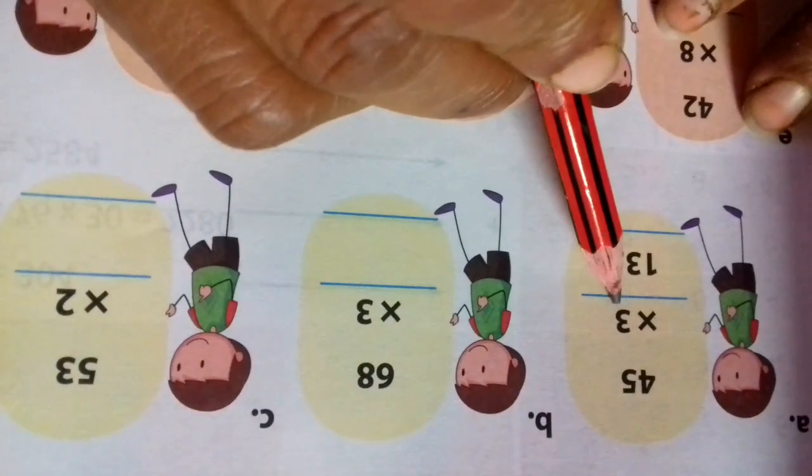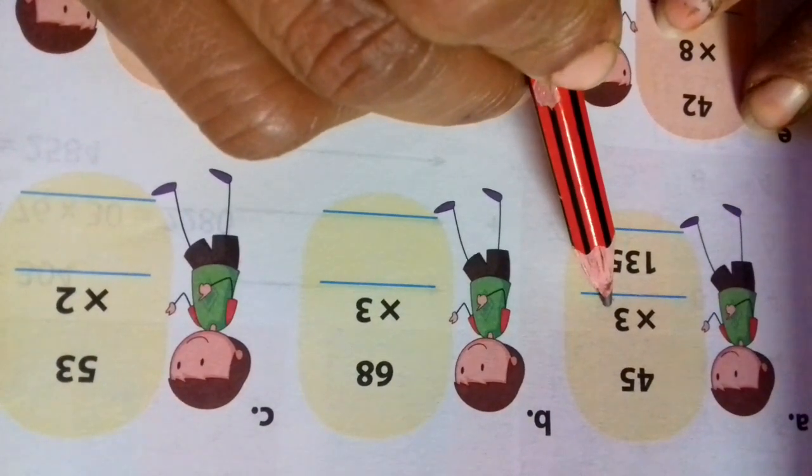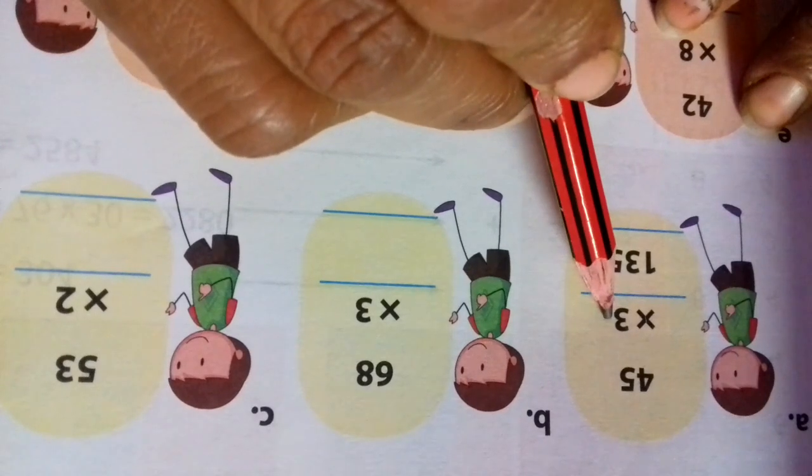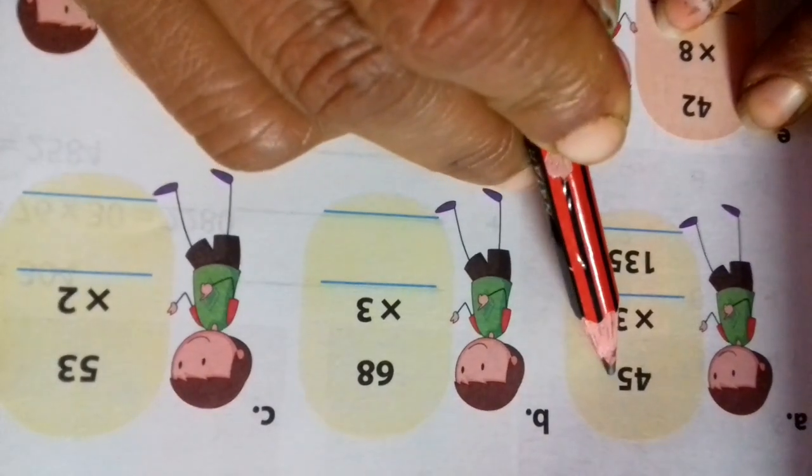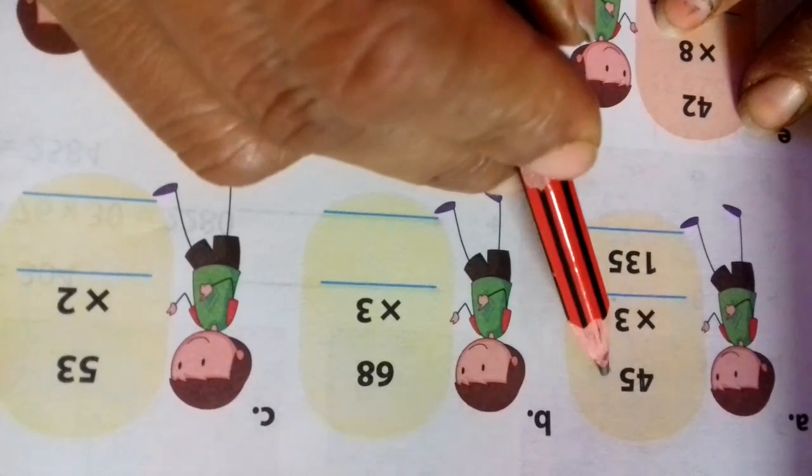Table of 3, we need to add the number of the table. The number of the table is 3. How many times we have to add? 5 times. 3 table is 5 times.